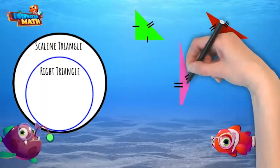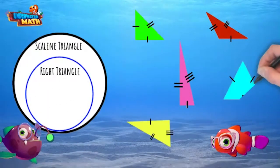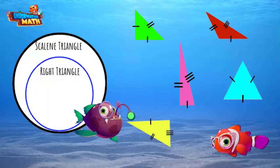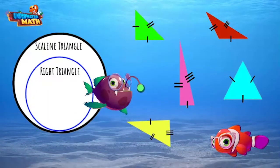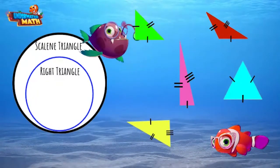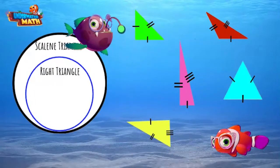My friend Bob is going to help us pick the triangles that belong in the inner circle of this organizer. Hey Bob! Hi Lucy! I see we are trying to find right scalene triangles. That means we are looking for triangles that have a right angle and all sides that are a different length. Let's look through our options. The green triangle has a right angle, but it has two sides that are the same length.